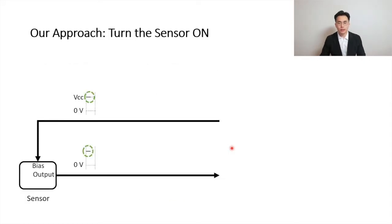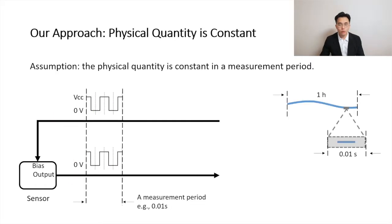Now let's look at more details of our approach. Turning the sensor on means that the sensor is biased at a high voltage, for example VCC. When the sensor is on, it outputs a signal carrying the information of the physical quantity. Turning off means the sensor is biased at 0V, and the sensor output becomes 0V too. In our approach, we assume that the physical quantity to be measured is constant in one measurement period. For example, room temperature changes very slowly over a long period such as one hour, but if we look at a very short period — say 0.01 seconds — we can regard the room temperature as constant. That 0.01 second is a measurement period.